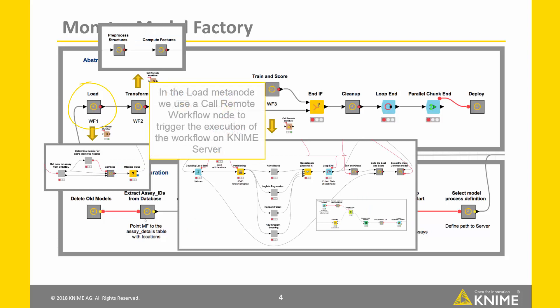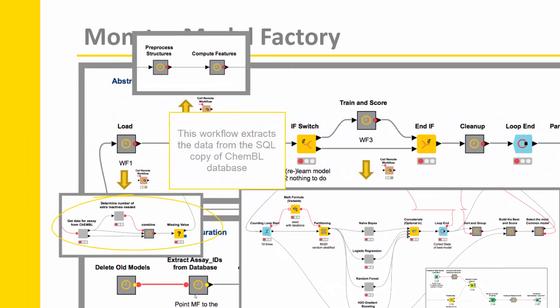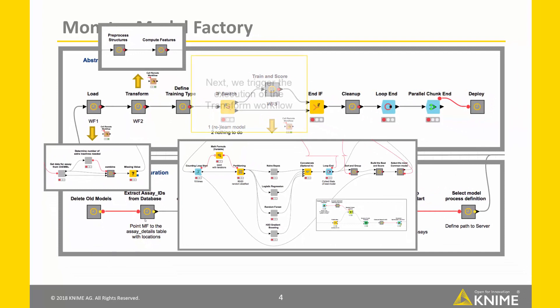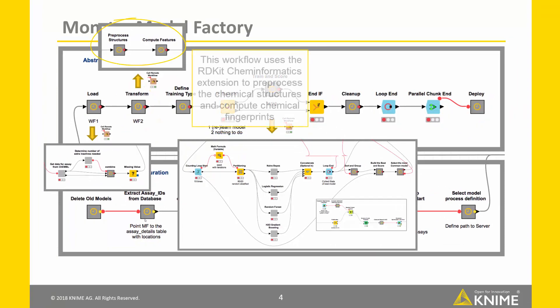In the Load tab meta node, we use a core remote workflow node to trigger the execution of the corresponding workflow on KNIME Server. This workflow extracts the data from the SQL copy of the Campbell database. For some datasets, this operation can take up to several hours because of the complexity of the SQL queries. Next, we trigger the execution of the Transform workflow, which uses the RTKit Chemoinformatics extension to preprocess the chemical structures and compute chemical fingerprints.